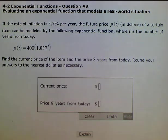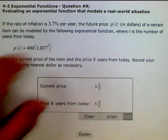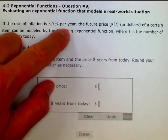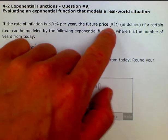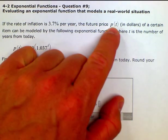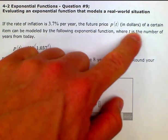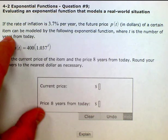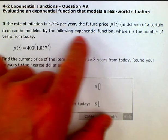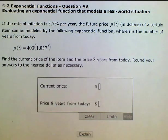So here we're evaluating an exponential function that models a real-world situation. If the rate of inflation is 3.7% per year, the future price, which is identified by P with relation to time, so principal with relation to time in dollars, of a certain item can be modeled by the following exponential function, where T is the number of years from today.